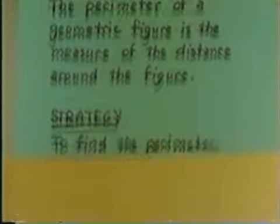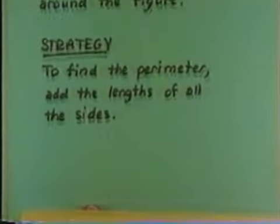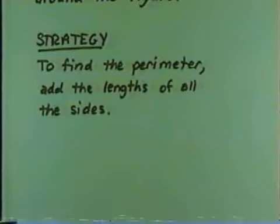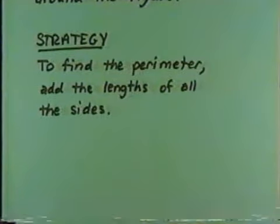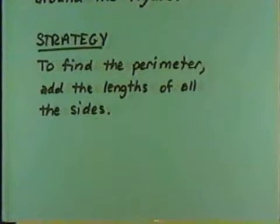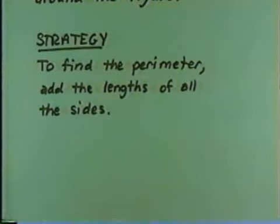This gives us a strategy. To find the perimeter, add the length of all the sides. That's all we must do — just add the lengths of all the sides.